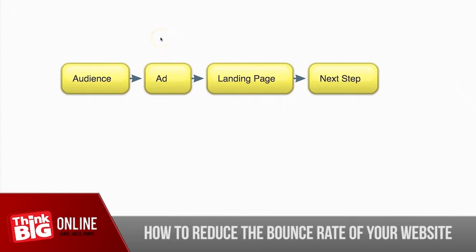You could have the right audience but created a very compelling ad that disappointed people when they landed on the page. For example, if your ad says 'get a brand new car for free' and they land on the page to find they have to pay thirty thousand dollars, most people are going to click the back button. That's incongruent and causes a really high bounce rate. With Google AdWords, if you're targeting 500 different keywords all sending to the same landing page, not all will have the same bounce rate.